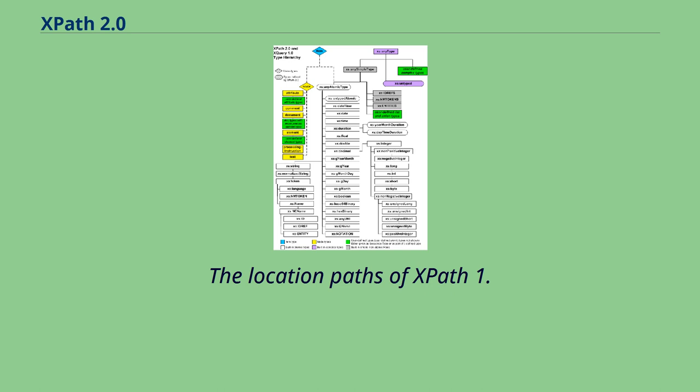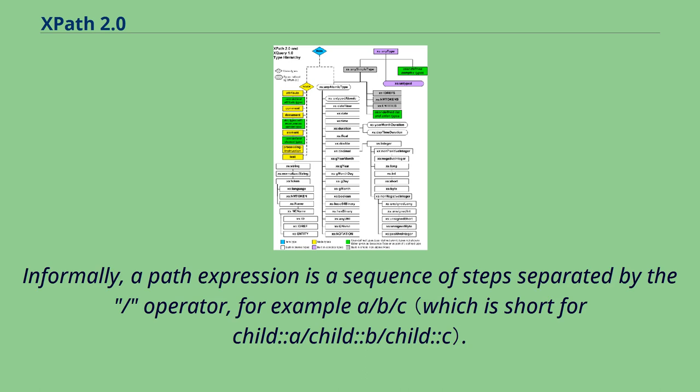The location paths of XPath 1.0 are referred to in XPath 2.0 as path expressions. Informally, a path expression is a sequence of steps separated by the slash operator, for example a/b/c.